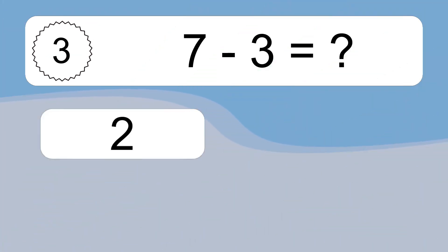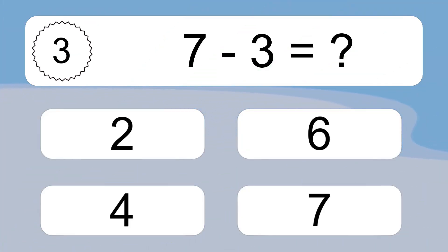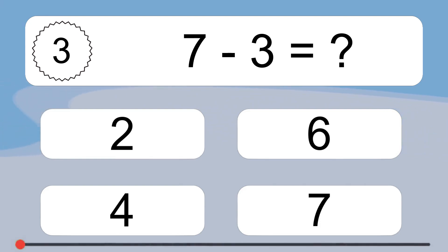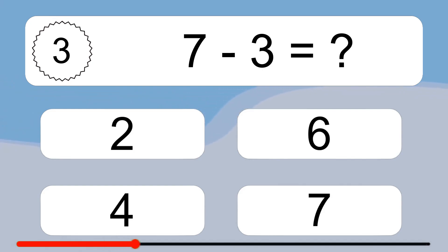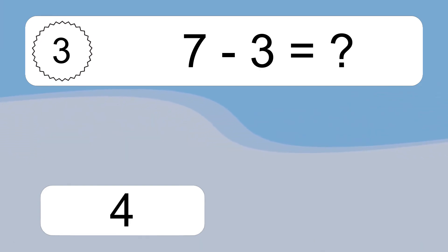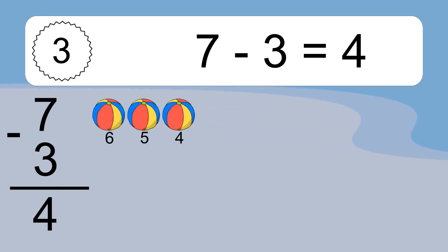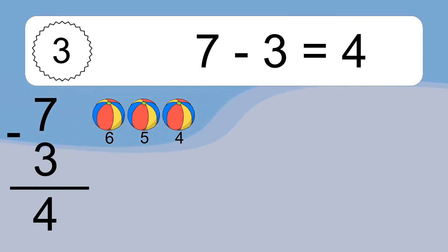7 minus 3 equals what? 7 minus 3 equals 4. Let's count it: 6, 5, 4.